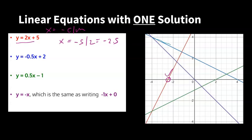Moving to the blue function: x equals minus 2 divided by minus 0.5. The two negatives make a plus, and 2 divided by 0.5 equals 4. Looking at the graph, the solution is indeed 4. For the green equation y equals 0.5x minus 1: x equals minus c, which is minus negative 1, becoming plus 1, divided by 0.5, which equals 2. Looking at the green function on the graph — that's correct as well.